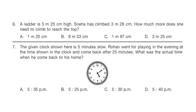Question 6: A ladder is 5m 25cm high. Sneha has climbed 3m 28cm. How much more does she need to climb to reach the top? Here, you have to subtract 3m 28cm from 5m 25cm. The correct answer is option C, 1m 97cm.